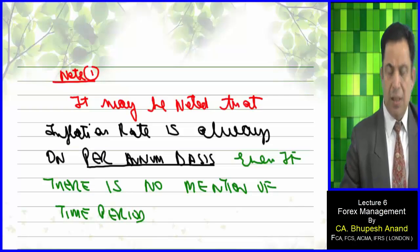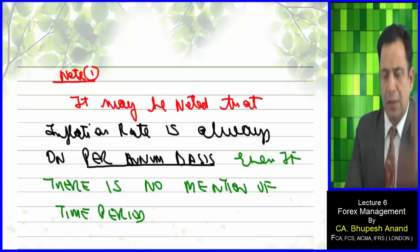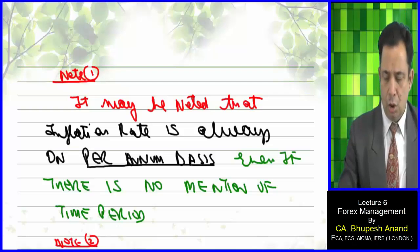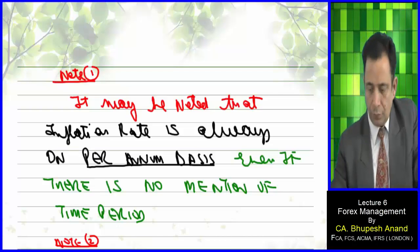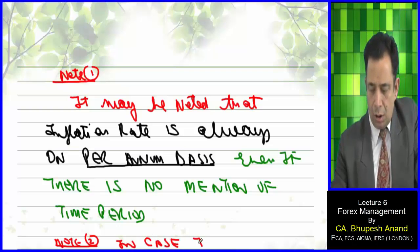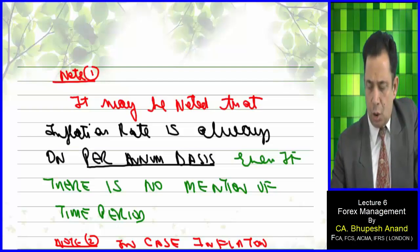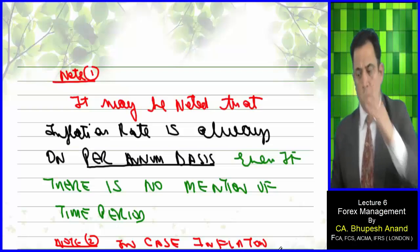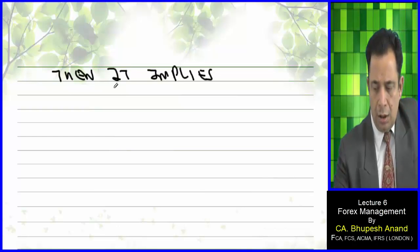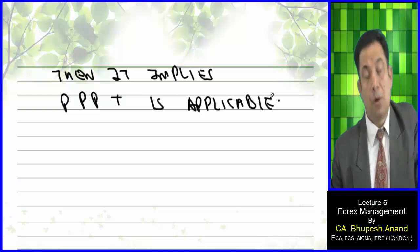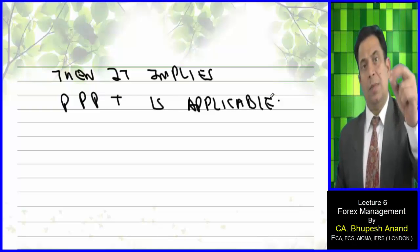If we don't have a time period specified, we assume per annum. Note number one: in case inflation rate is specified in the question, it implies that Purchasing Power Parity Theory is applicable. The question will not tell you directly — you have to recognize that PPPT applies.